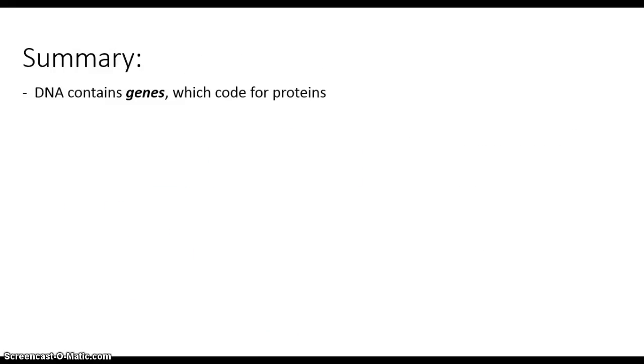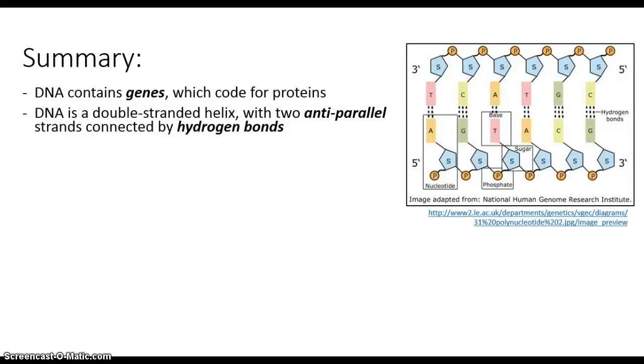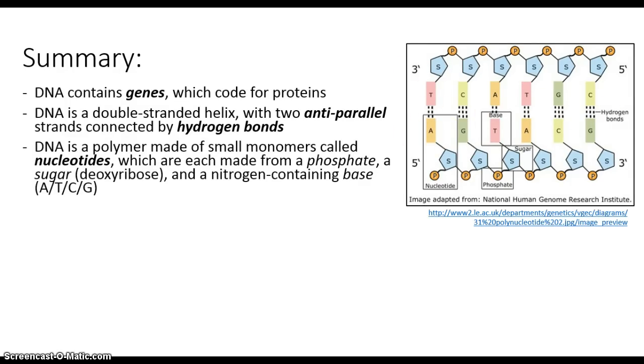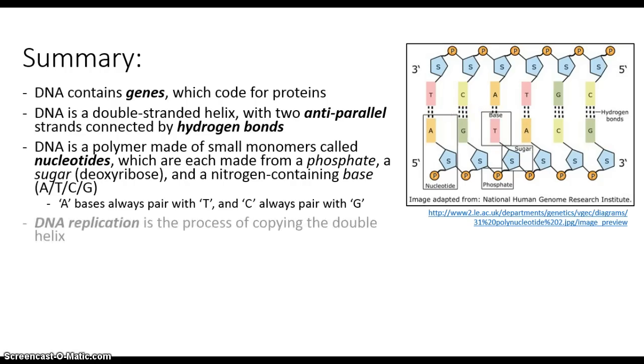So, in summary, DNA contains instructions called genes, which code for proteins. The DNA is a double helix with two strands that are anti-parallel, and these anti-parallel strands are connected by hydrogen bonds. This molecule is a polymer made of many monomer subunits, these nucleotides as they're called, each of which is made of a phosphate, a sugar called deoxyribose, and a base, either adenine, or guanine, or thymine, or cytosine. These bases always pair in certain ways. A's always pair with T's, C's always with G's.